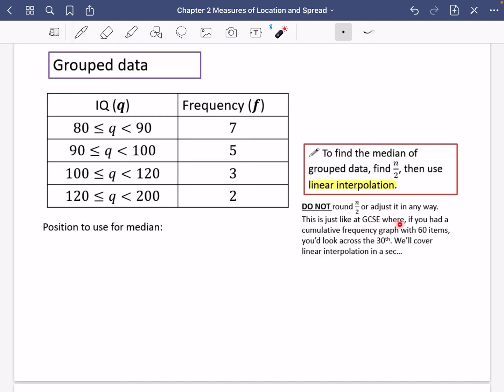This is just like GCSE, where if you had a cumulative frequency graph with 60 items, you'd look across at the 30th. You wouldn't do anything other than just going across at the 30th. We're going to cover what linear interpolation is in a next video.